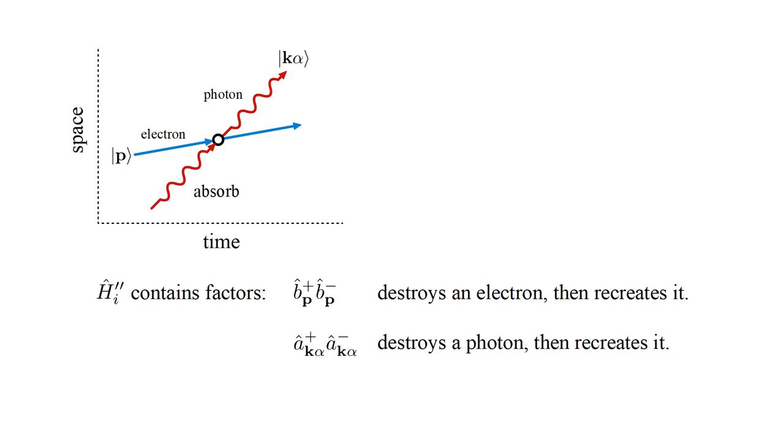Since the destruction operator is to the right of the creation operator, this suggests that the photon is first absorbed, then emitted. Of course, that would require the photon to already exist. But there is also a factor with the creation operator on the right. This suggests the photon is first emitted, and then absorbed.